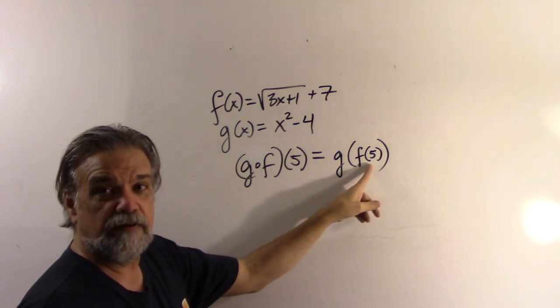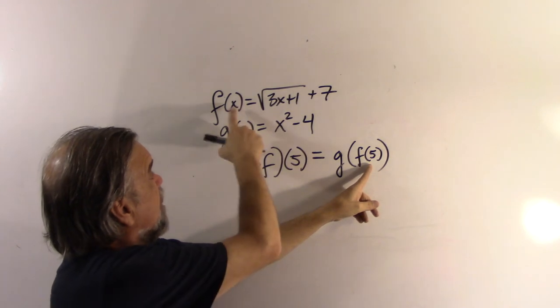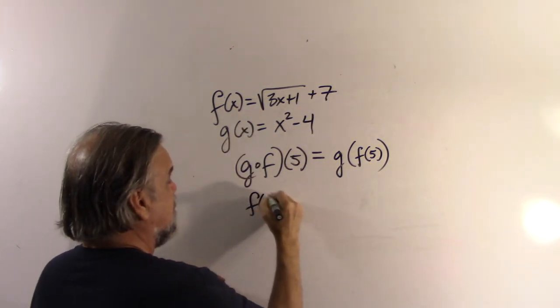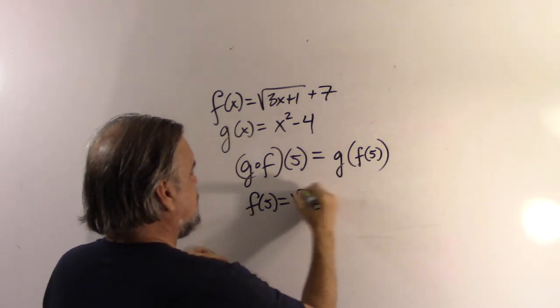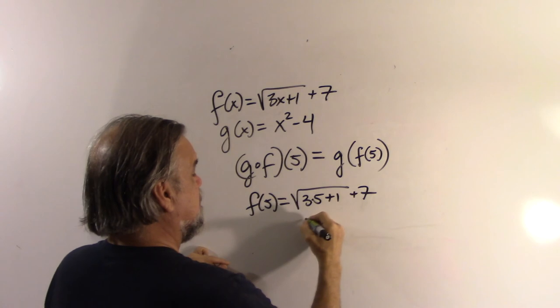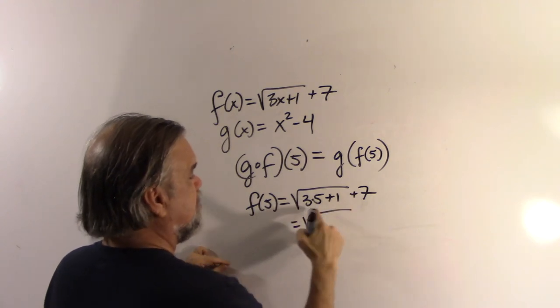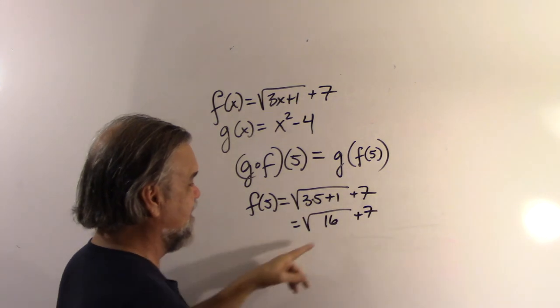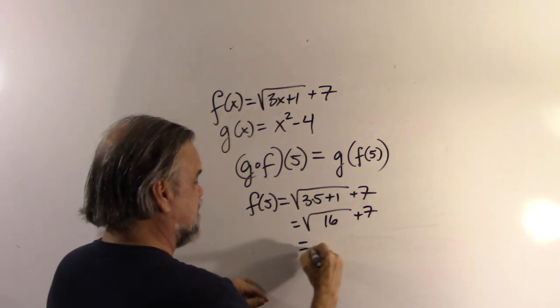Now, what's f(5)? Well, that's f. Let's figure out what that is. f(5) is the square root of 3 times 5 plus 1 plus 7. And that's equal to the square root of 15 plus 1 is 16 plus 7. Hey, hey, that's going to be 4 plus 7. That's going to be 11.